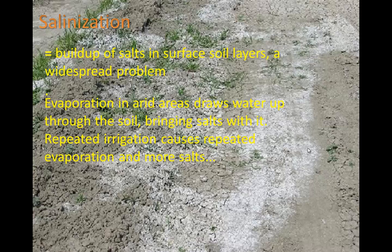These minerals are also dissolved in soil as soil minerals. What can happen is evaporation in arid areas can draw water up through the soil, bringing salt with it. By putting irrigation water at the surface and allowing it to evaporate, the process of evaporation can actually pull water from deeper in the soil up to the surface, bringing with it these salts. Repeated irrigation can cause repeated evaporation and more salts to the surface.